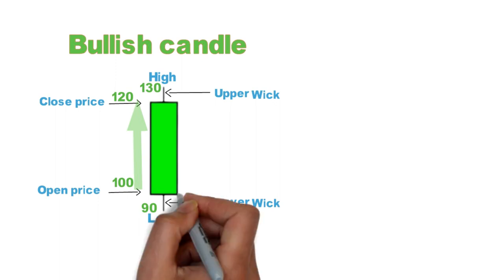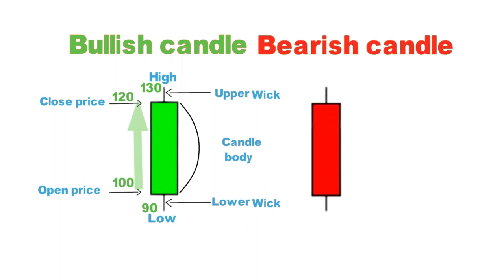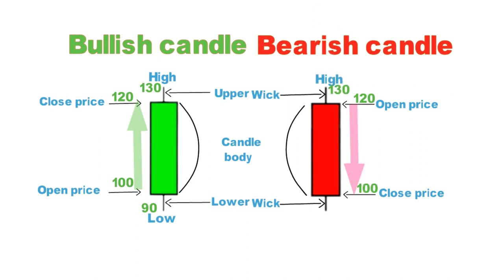So in this scenario, the candle moves from downside to upside — this part is known as the body of the candle. Next is the red candle, meaning the bearish candle. In a red candle, this is opening, this is closing. The top wick shows the highest price and the bottom wick shows the lowest price. The market opens higher and closes below. In this red candle: price opens at 120, closes at 100, high is 130, low is 90 — candle moves from upside to downside.